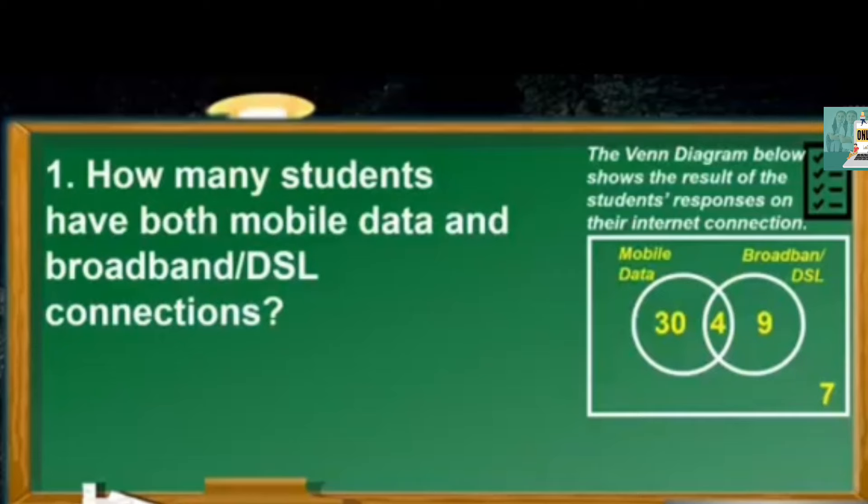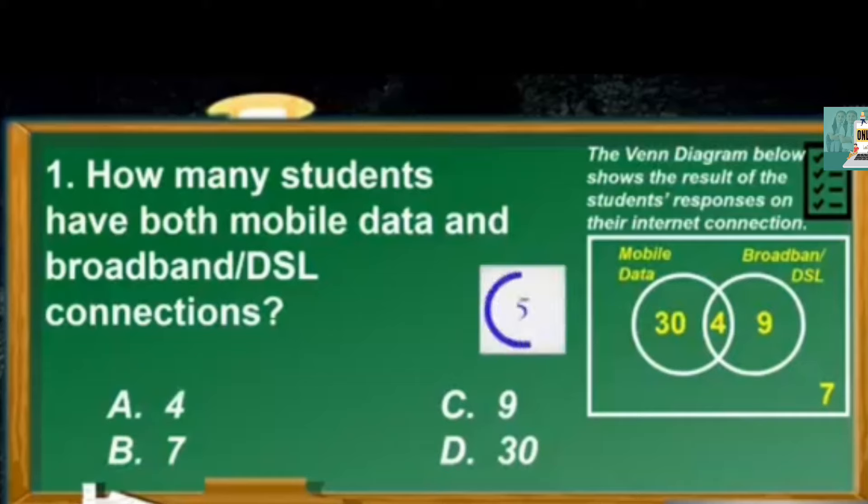How many students have both mobile data and broadband or DSL connections? A4, B7, C9, D30. The answer is A4.